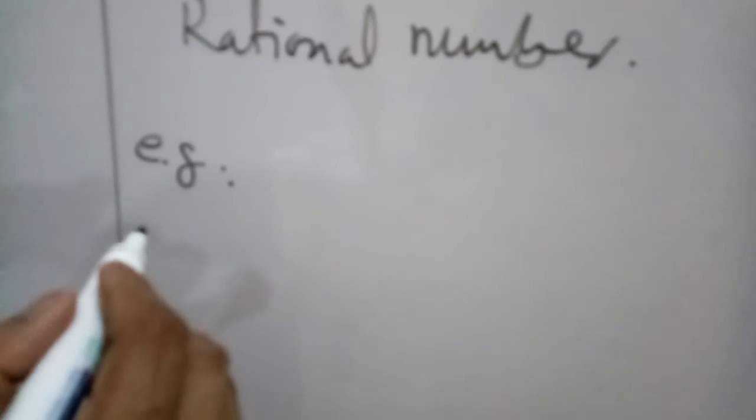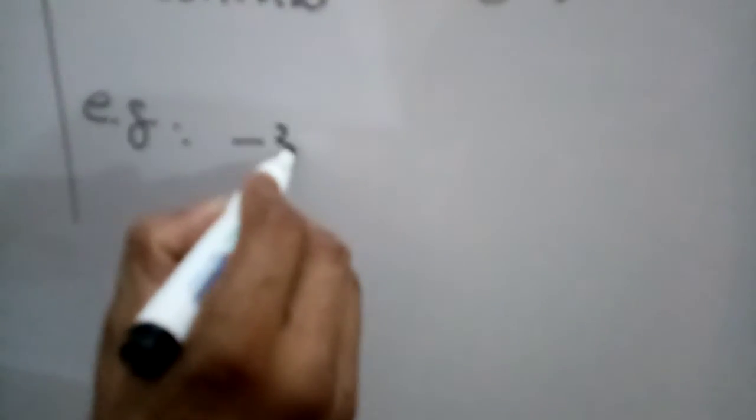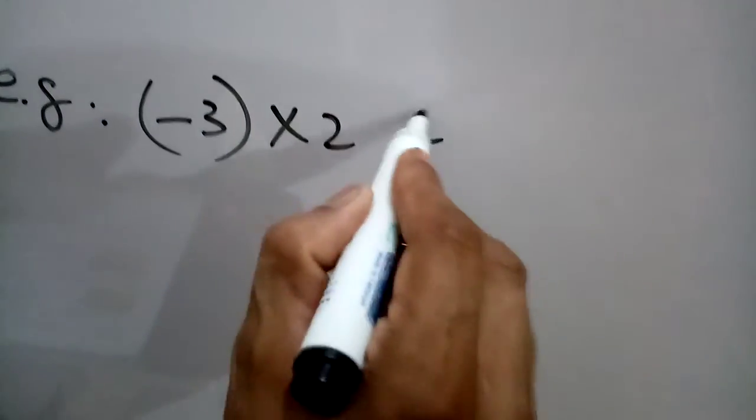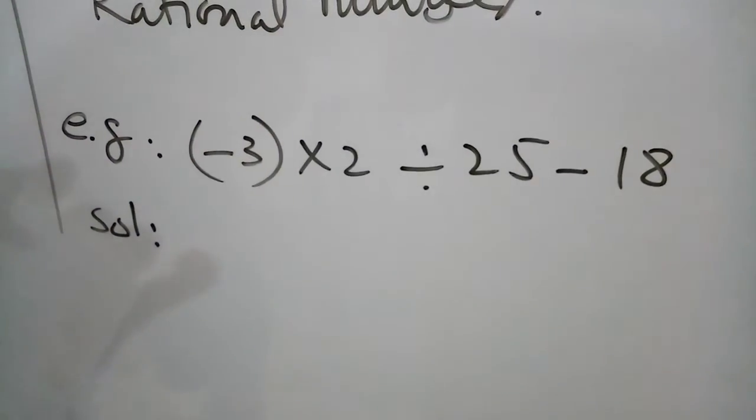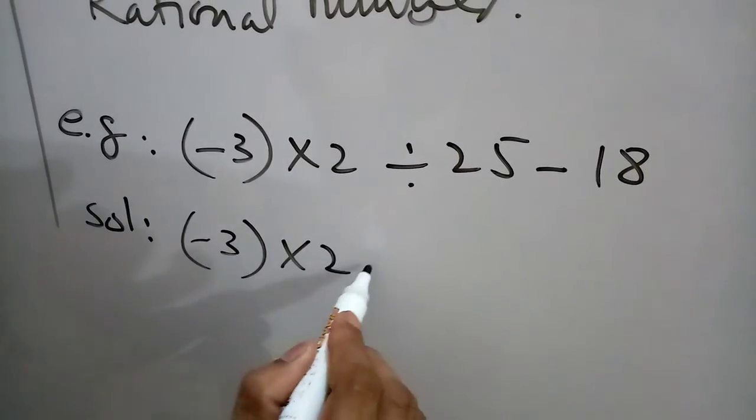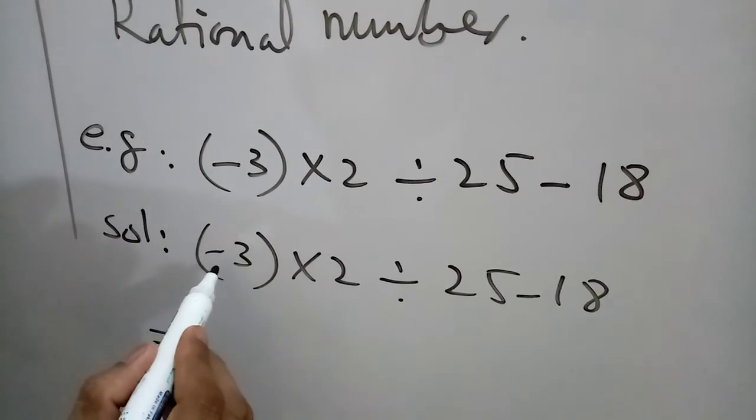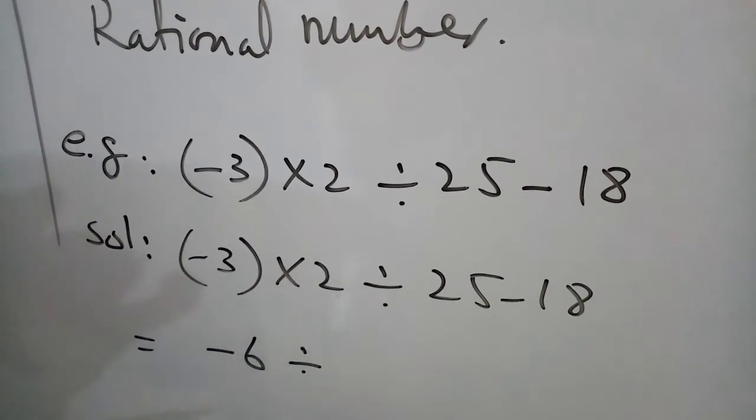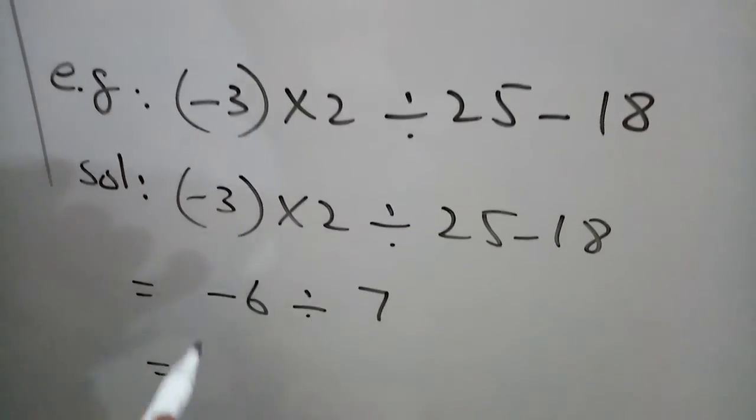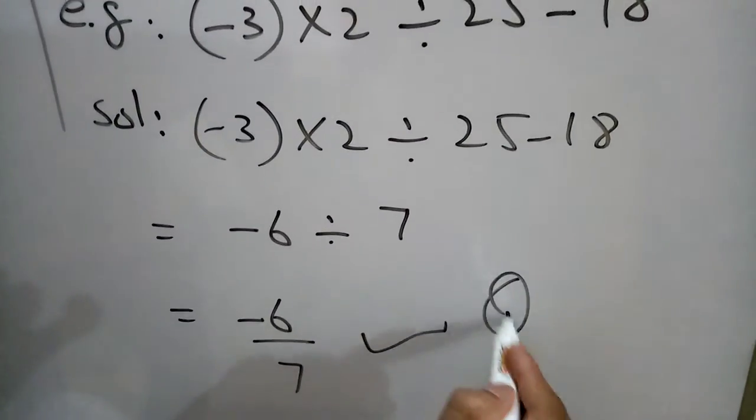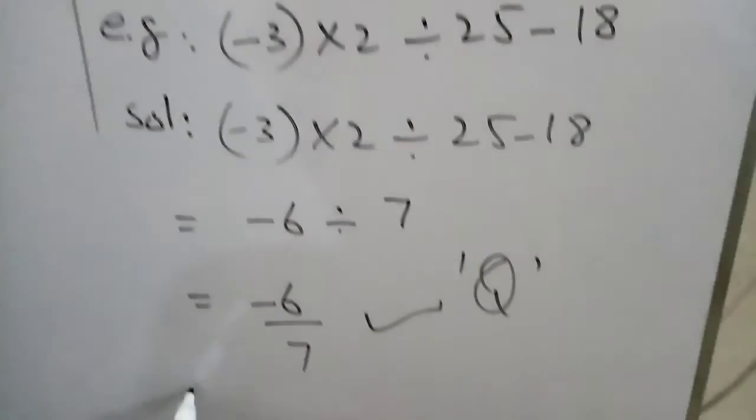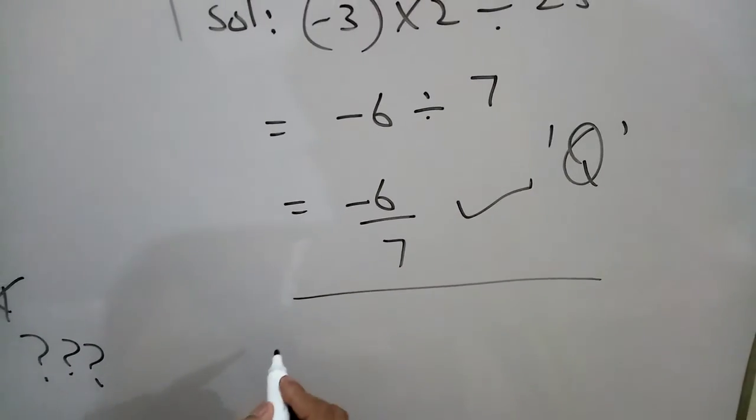Here is our example. We have to write a fraction equivalent to the number and determine if it is a rational number. We have an example: (-3) × 2 ÷ (25 - 18). When we calculate: 2 times -3 is -6, and divided by 25 minus 18 is 7, so it can be written in the form -6/7. So it is a rational number.